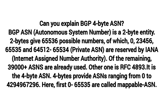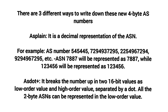Of the remaining 39,000-plus ASNs, many are already in use. RFC 4893 defines the four-byte ASN. Four bytes provide ASNs ranging from zero to 4,294,967,296. The first zero through 65,535 are called mappable ASNs. There are three different ways to write down these new four-byte AS numbers.